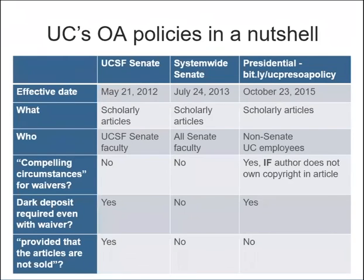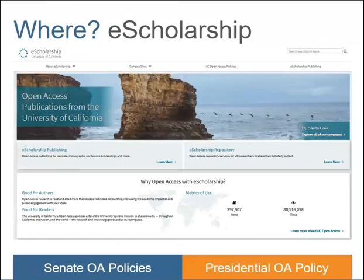In summary, the UCSF policy looks almost exactly like the model policy language. The system-wide Senate policy doesn't require a dark deposit with a waiver and removes the non-commercial provision provided articles aren't sold. The presidential policy borrows much of that language but restructures it and adds provisions for when authors don't own their copyright. Implementation is handled through eScholarship, which serves as the institutional repository and publishing platform for UC's 10 campuses and affiliated research centers, where researchers can participate in UC's open access policies.